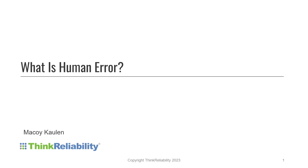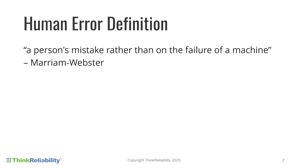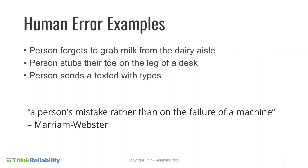We're often asked, what even is human error? Well, at a base level, human error is when a person makes a mistake. Some quick examples are when you forget milk at the grocery store, accidentally stub your toe, or send a text riddled with typos.